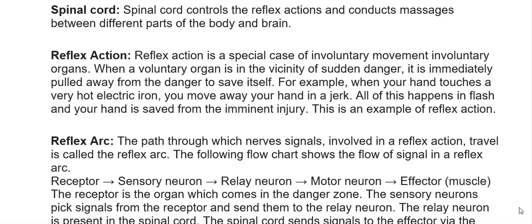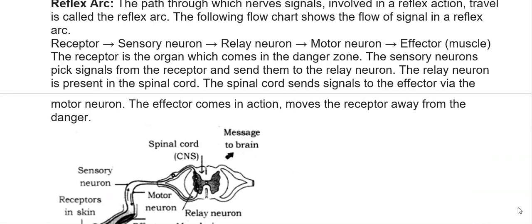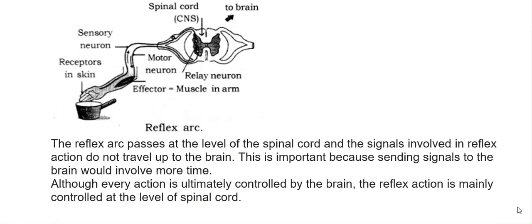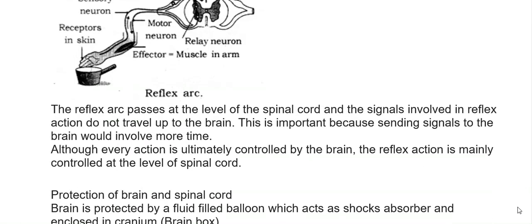The reflex arc is the path through which nerve signals involved in a reflex action travel: Receptor → Sensory neuron → Relay neuron → Motor neuron → Effector muscle. The receptor is the organ that comes in the danger zone. Sensory neurons pick up signals from the receptor and send them to the relay neuron, which is present in the spinal cord. The spinal cord sends signals to the effector via the motor neuron, which moves the receptor away from the danger. The reflex arc passes at the level of the spinal cord, and signals do not travel up to the brain.